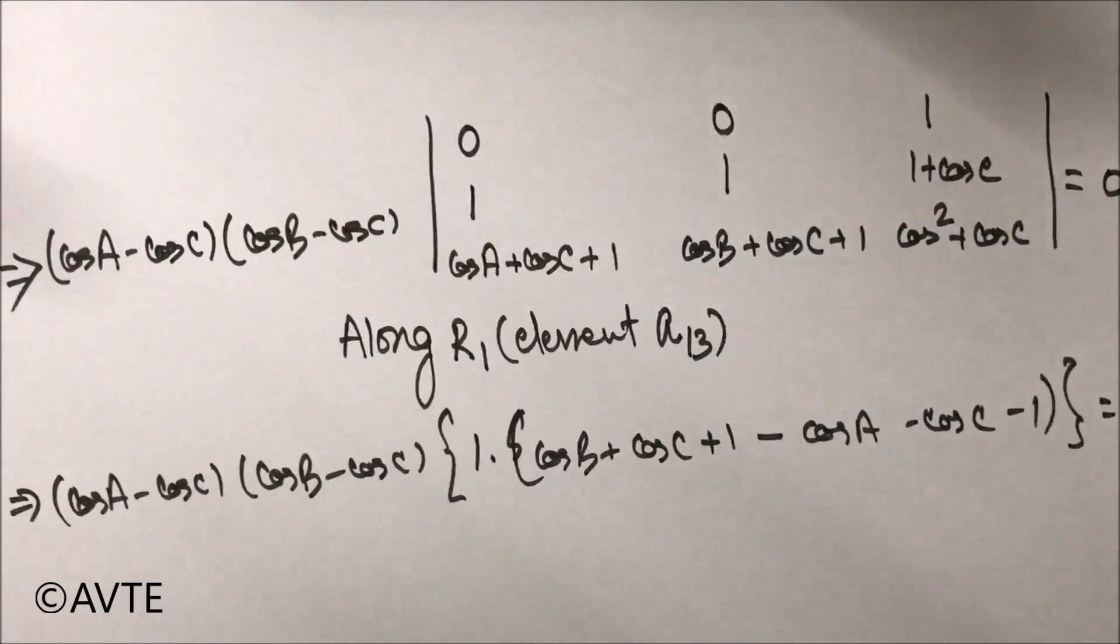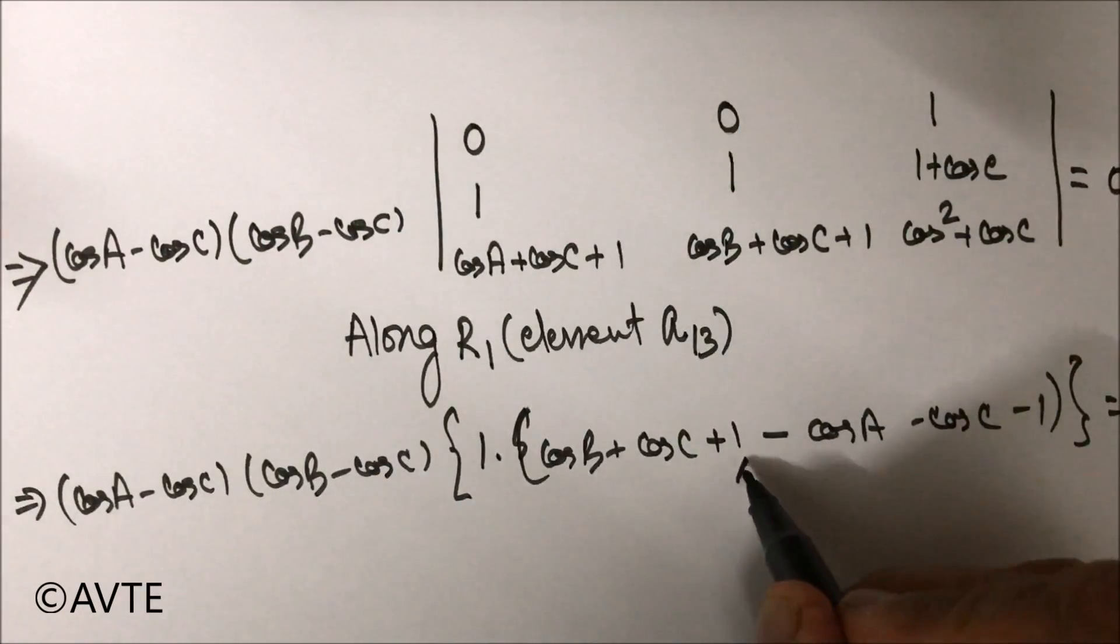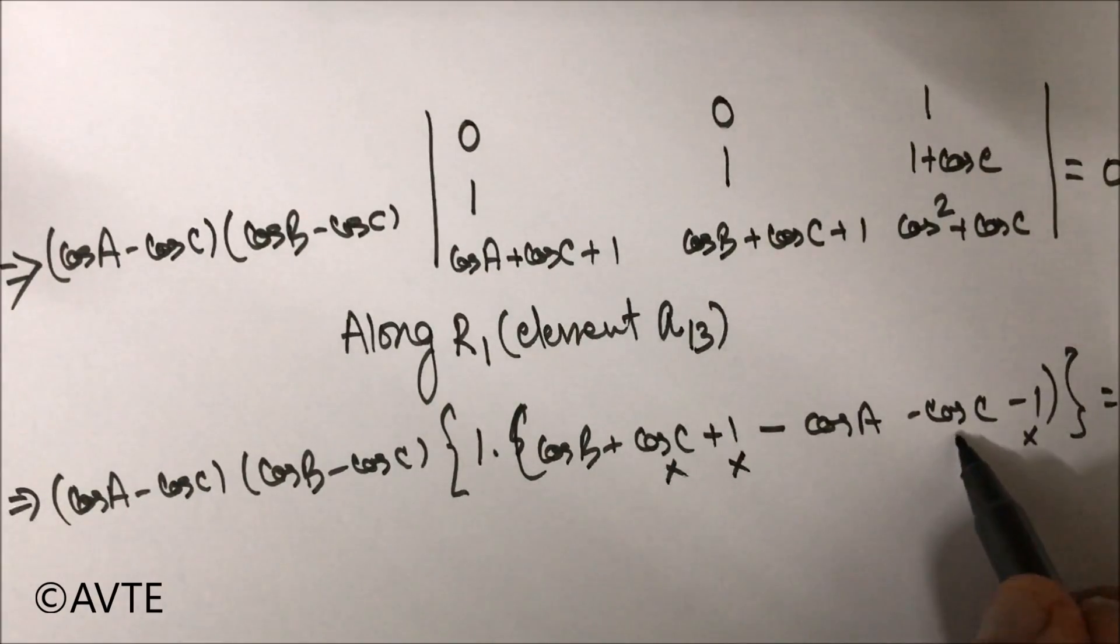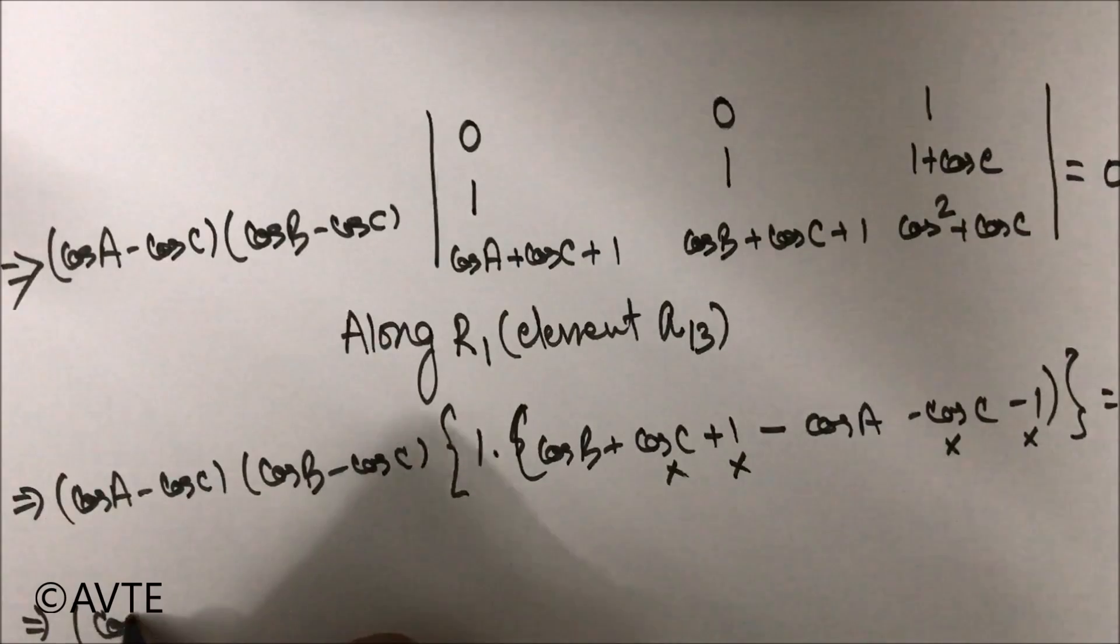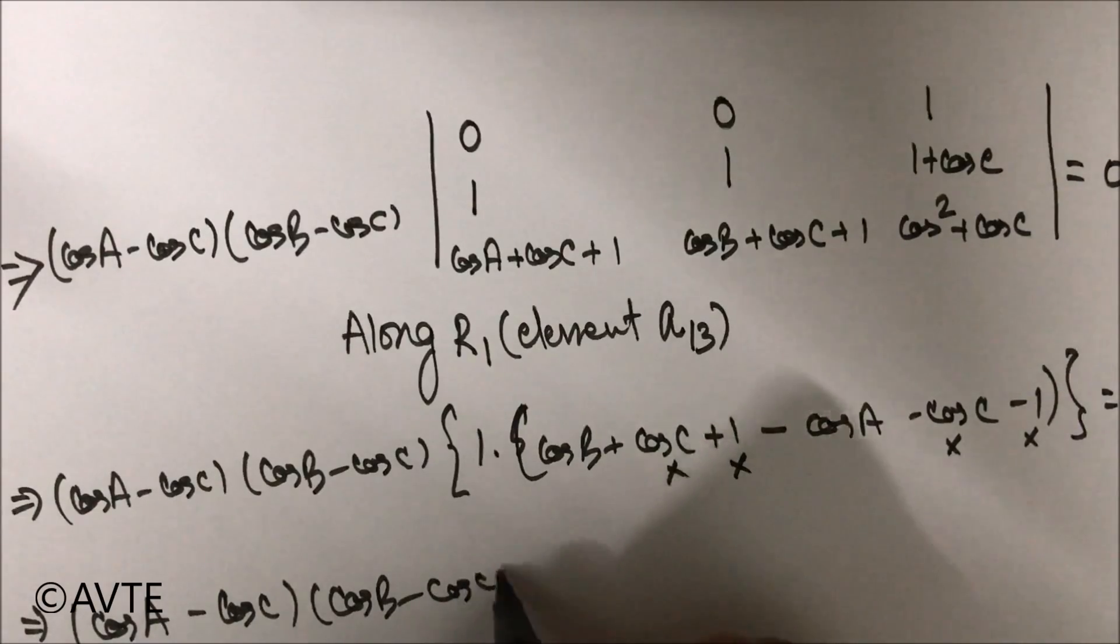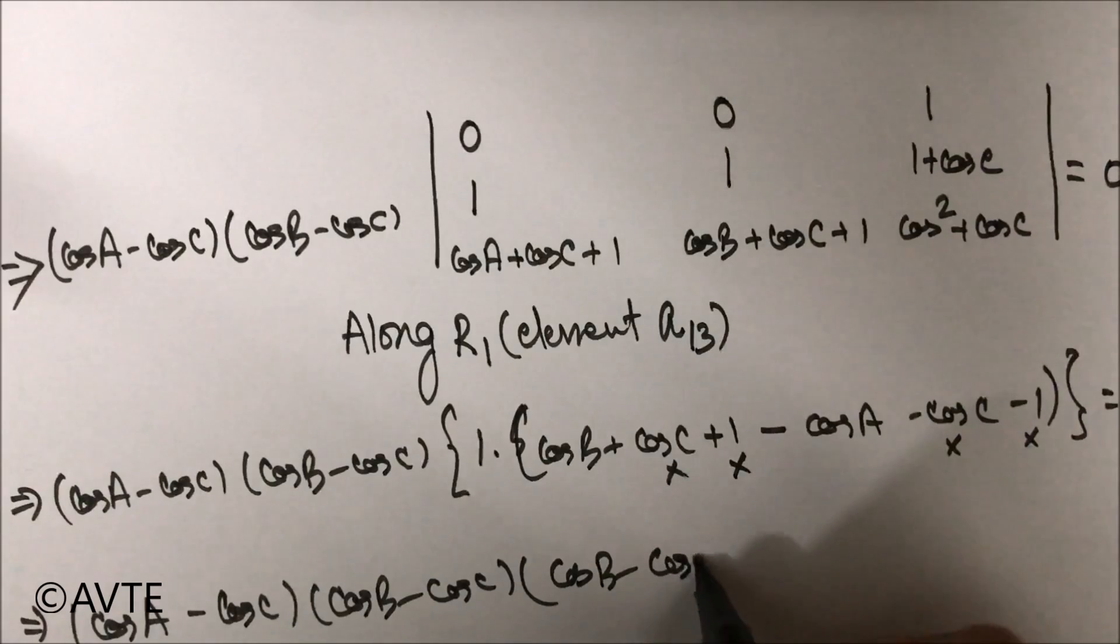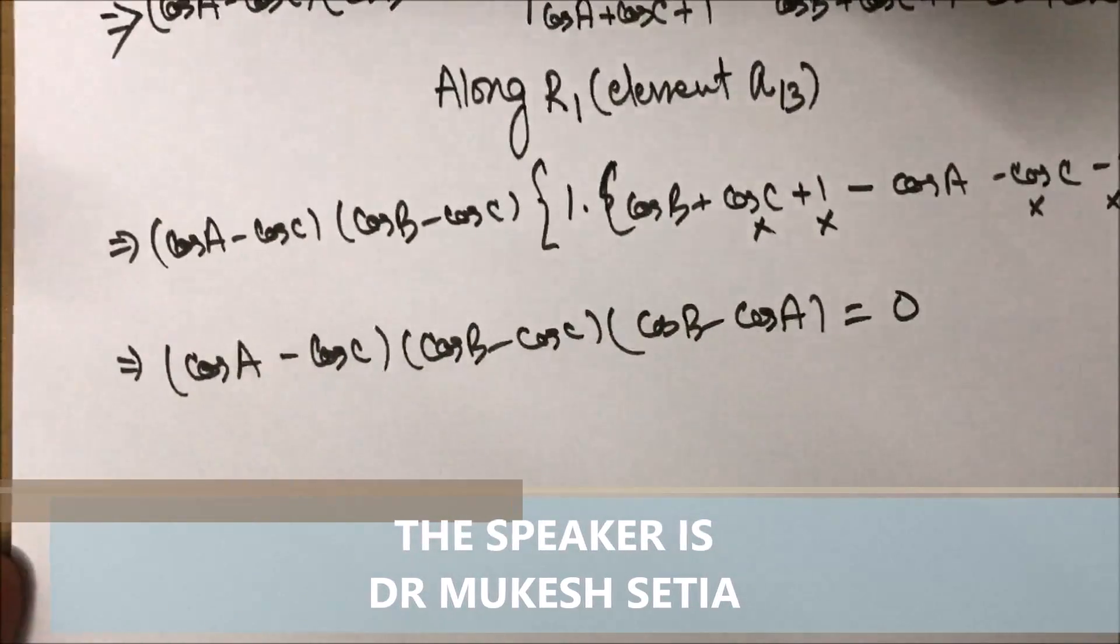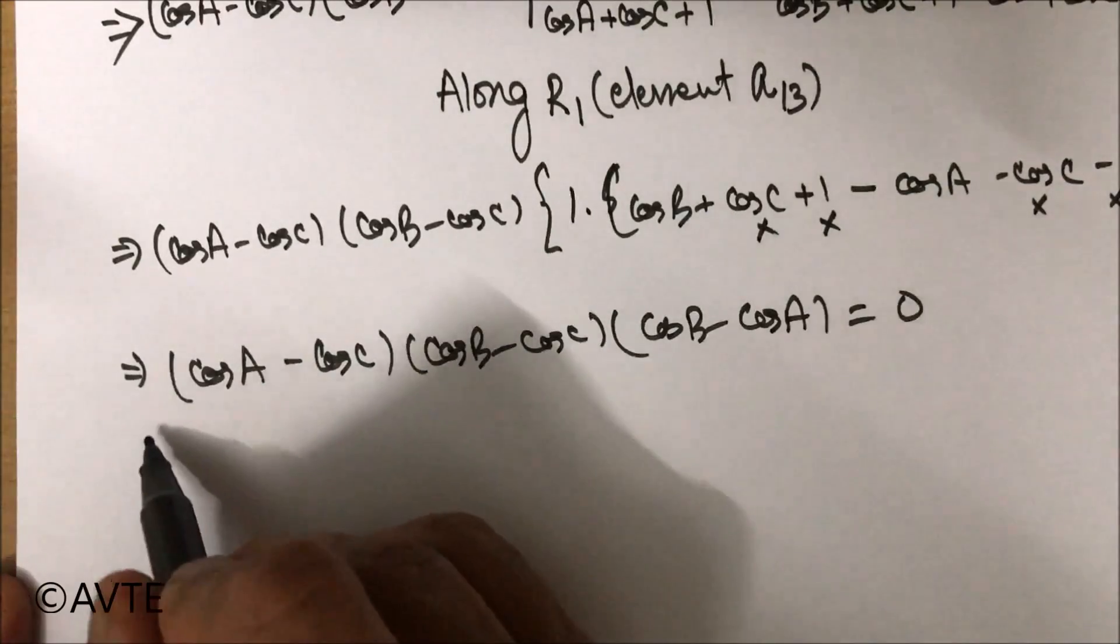Okay, so now when we further simplify, you can cancel one with minus one, you can cancel plus cos C with minus cos C, and you can see that now we have three factors with us. And this question is so beautiful because we have three factors, and each time if I take...